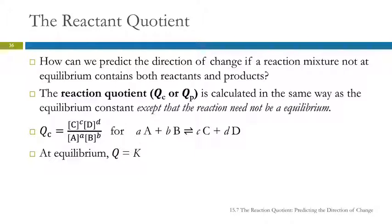Sometimes it's obvious. If you have zero products, then of course it's going to go in the forward direction. But many times you can't tell what direction it's going to go in. So the reaction quotient is something that tells us what direction the reaction will go to achieve equilibrium.